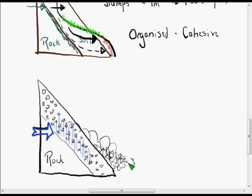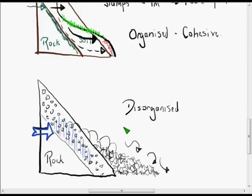That can happen very rapidly. This of course, depending on exactly what this is made up of, can be everything from very fine mud to rocks or whatever. But it is chaotic, it is not organized, it's not cohesive. So this is disorganized.